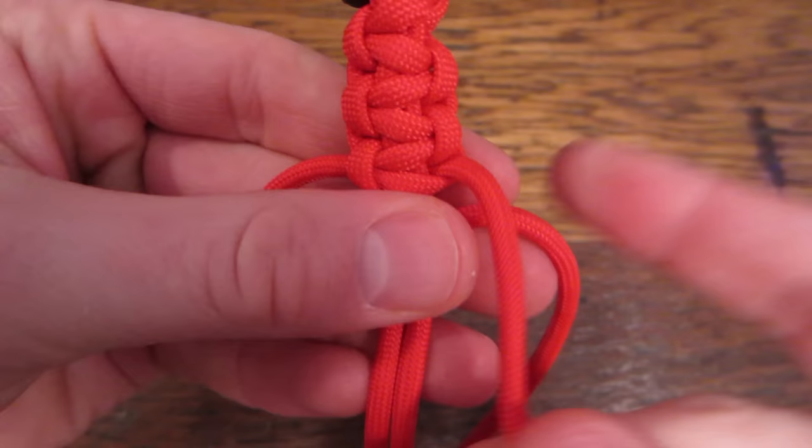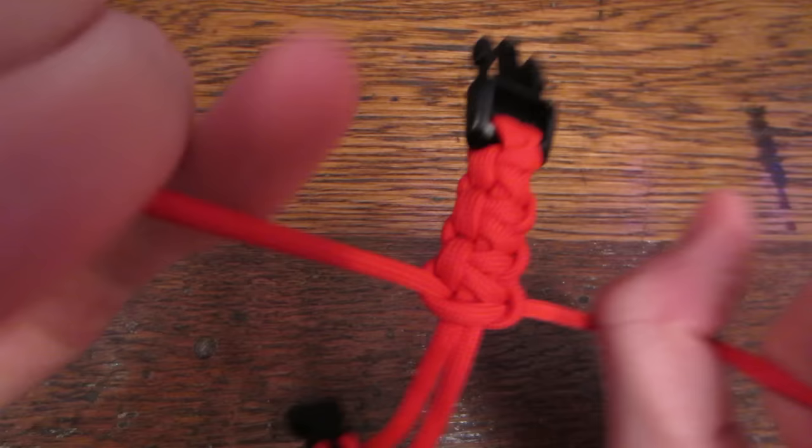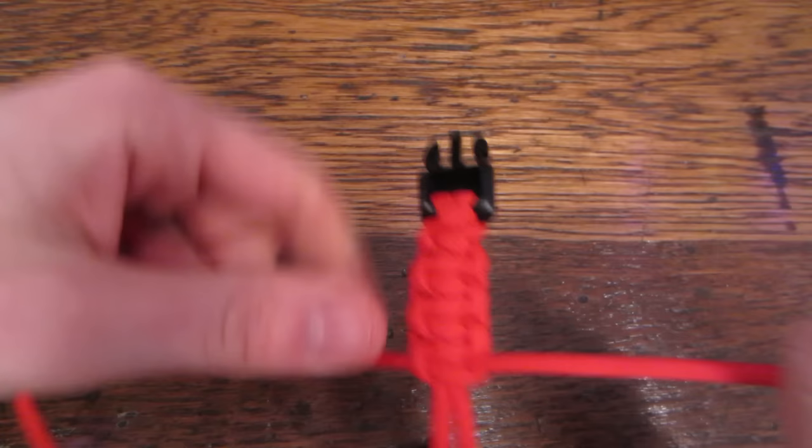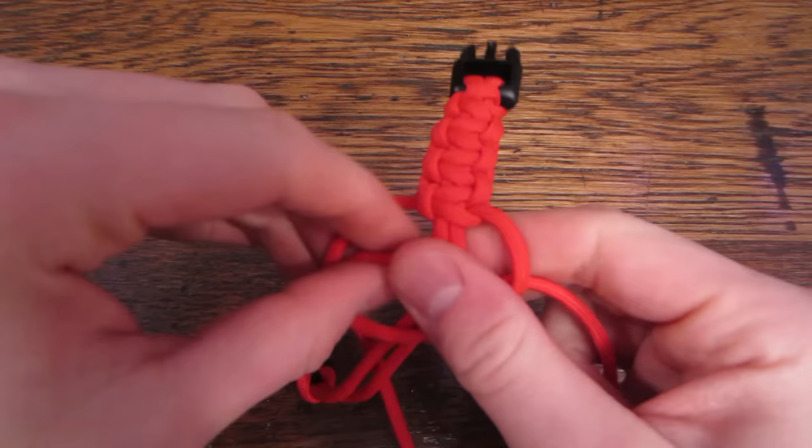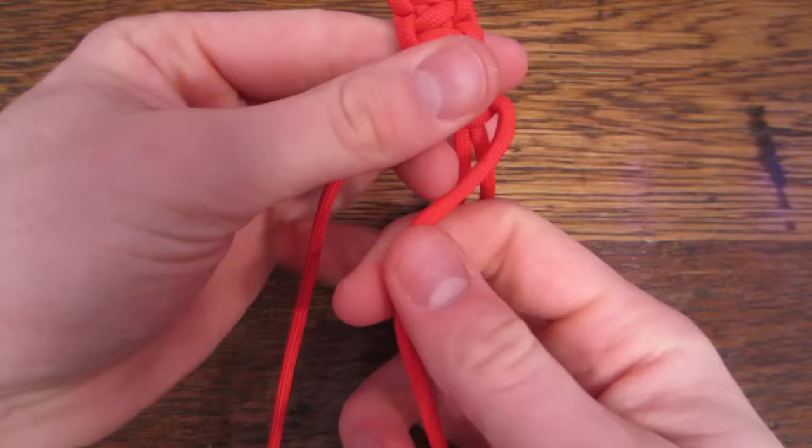Same thing now, we have the left side, left comes over, right comes down and around, back through that loop, pull that up and through, and pull tightly. We're going to continue doing the same pattern, making sure that we're alternating on each side each time that we make a new knot, until we get to the bottom of the bracelet.